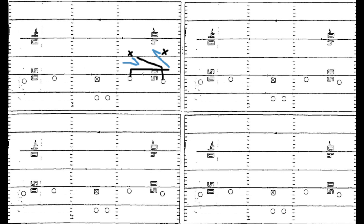I'll briefly talk about an adjustment to this: if the offense knows you're going to switch, what they'll actually do is have the out route pivot back inside when you go to switch. So the offense can second-level adjust and think one step ahead of the defense. It's possible, but we don't really care about that. We at least have to be able to cover the rub route. If we cannot cover the rub route in itself, we don't care what the offense does afterwards. As we saw with the Bears, it was a free touchdown — a free seven points. You cannot have that.